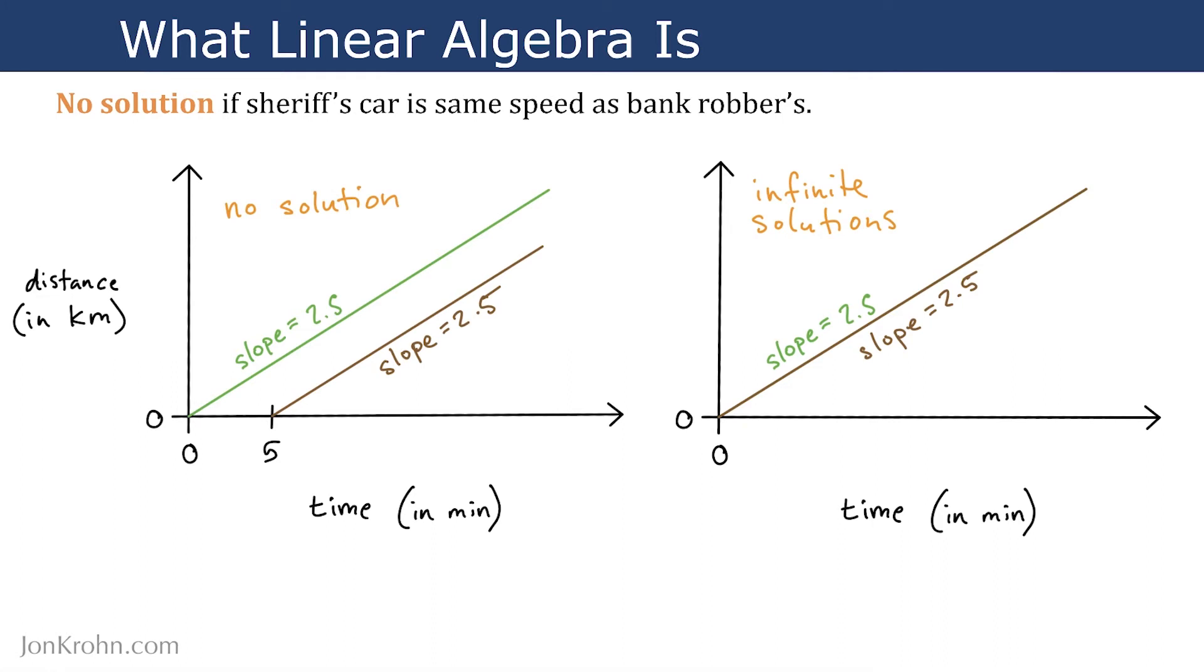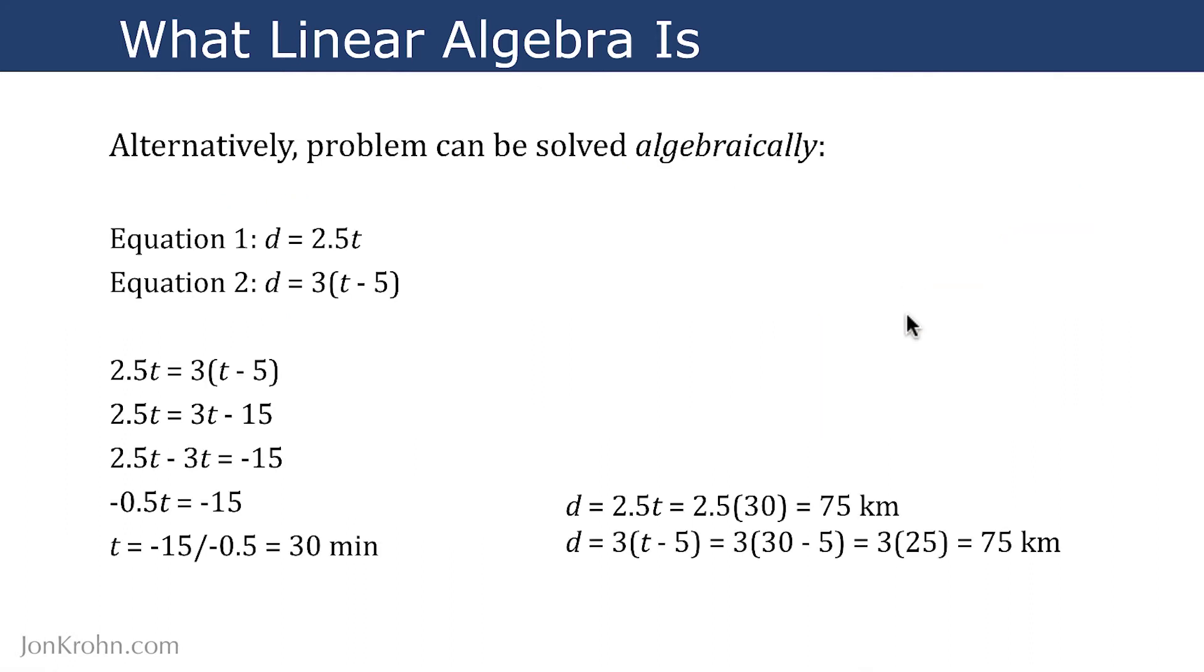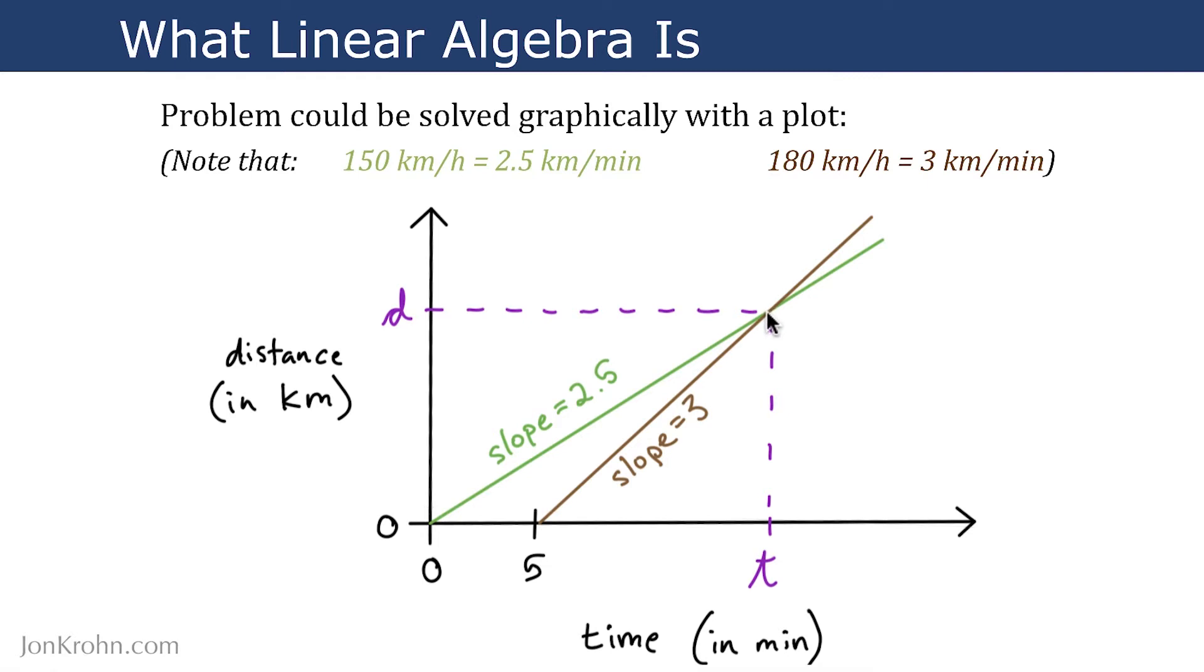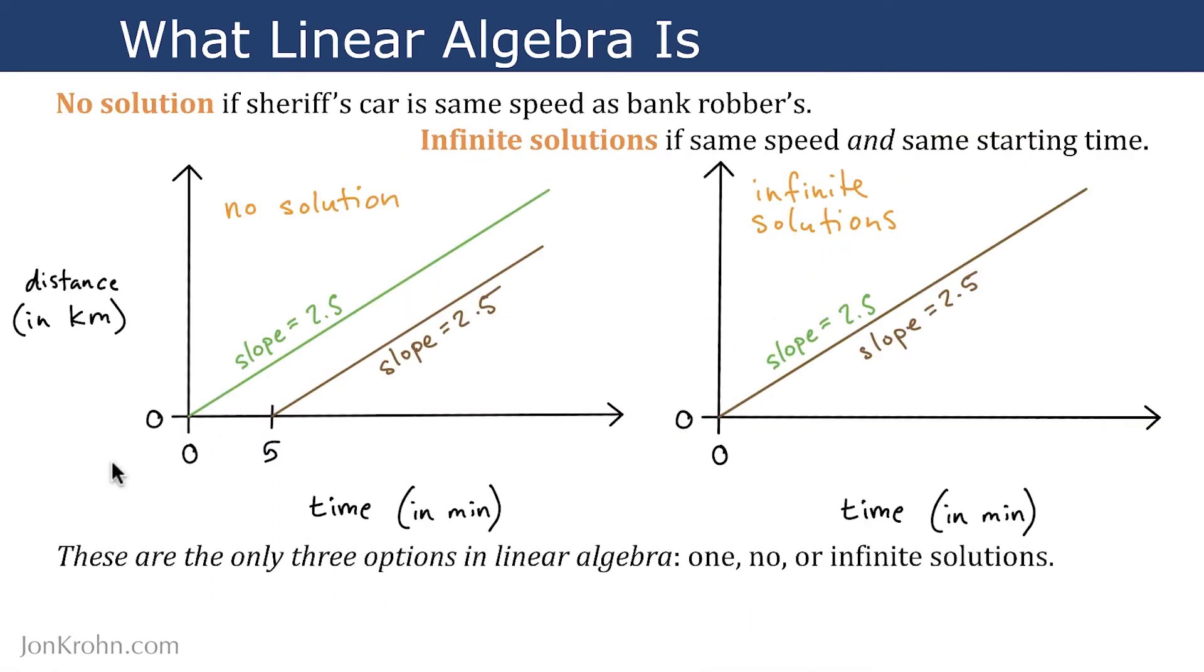We talked about how there would be no solution in situations where the lines all run parallel to each other. So in this case, if the sheriff's car is the same speed as the bank robber's, or there'd be infinite solutions if the bank robber and the sheriff have the same speed and starting at the same time. So in either of these situations, we can't specifically solve for the unknowns, but otherwise, we can solve for distance and time in this example. So we can solve for the point where the lines cross over, and this is what we mean by solving a linear algebra system. So there are only three options in linear algebra. Either there's one solution, no solutions, or an infinite number of solutions. It is impossible for lines to cross multiple times, which is why we can't have two or three solutions.